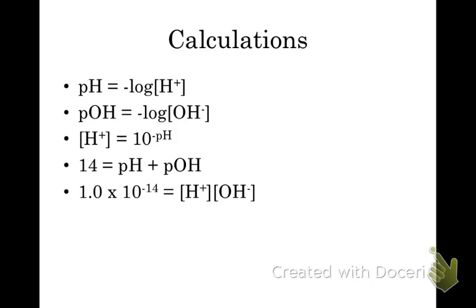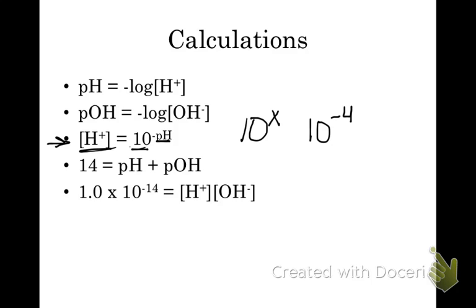We also have pOH — the parts of hydroxide, or OH⁻ concentration — which equals the negative log of OH⁻. To find the H⁺ concentration from pH, use 10 to the negative pH on your calculator — shown as 10 to the X. For example, if pH is 4, H⁺ concentration is 10⁻⁴. Another key relationship: pH plus pOH equals 14. And if you multiply the H⁺ concentration by the OH⁻ concentration, you get 1.0 × 10⁻¹⁴.